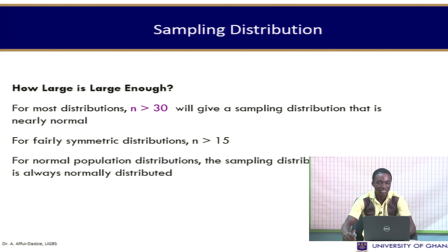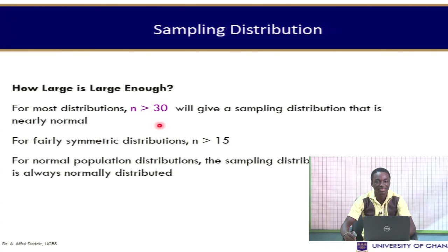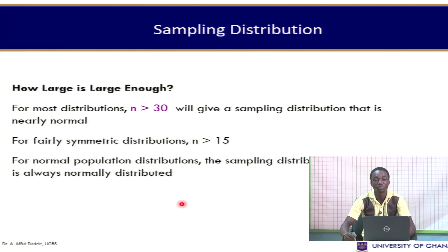How large is large enough? For most distributions, when n is greater than 30, the sampling distribution will be nearly normal. For a fairly symmetric distribution, we expect a sample size of 15 is sufficient. For normal population distributions, the sampling distribution of the mean is always normally distributed regardless of the sample size.